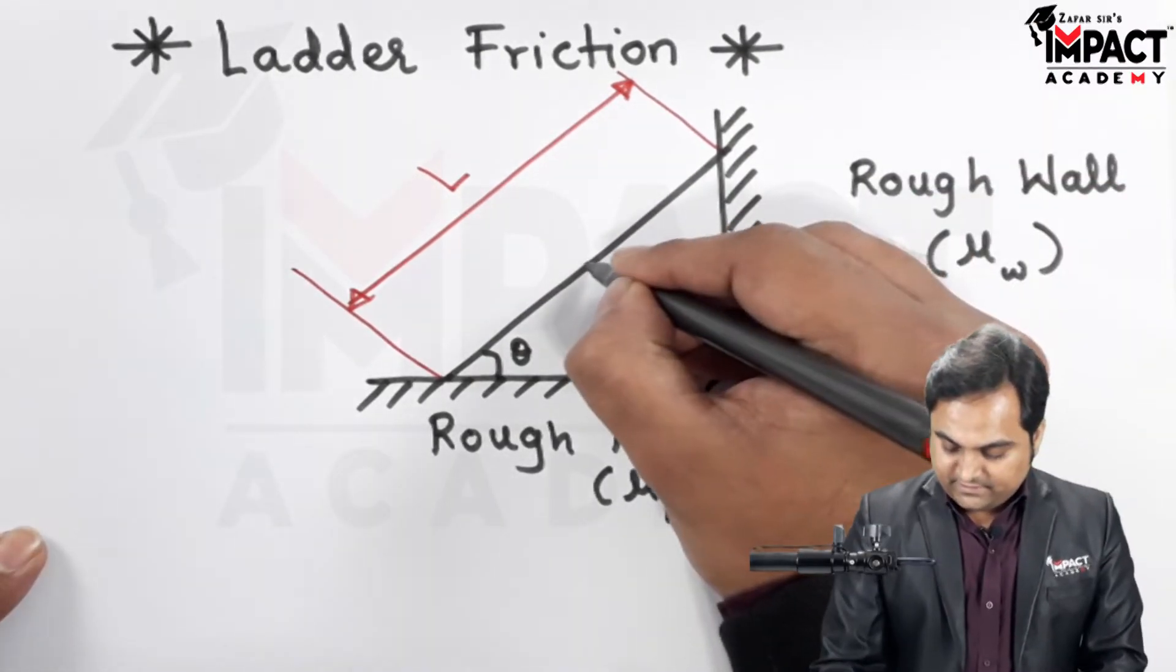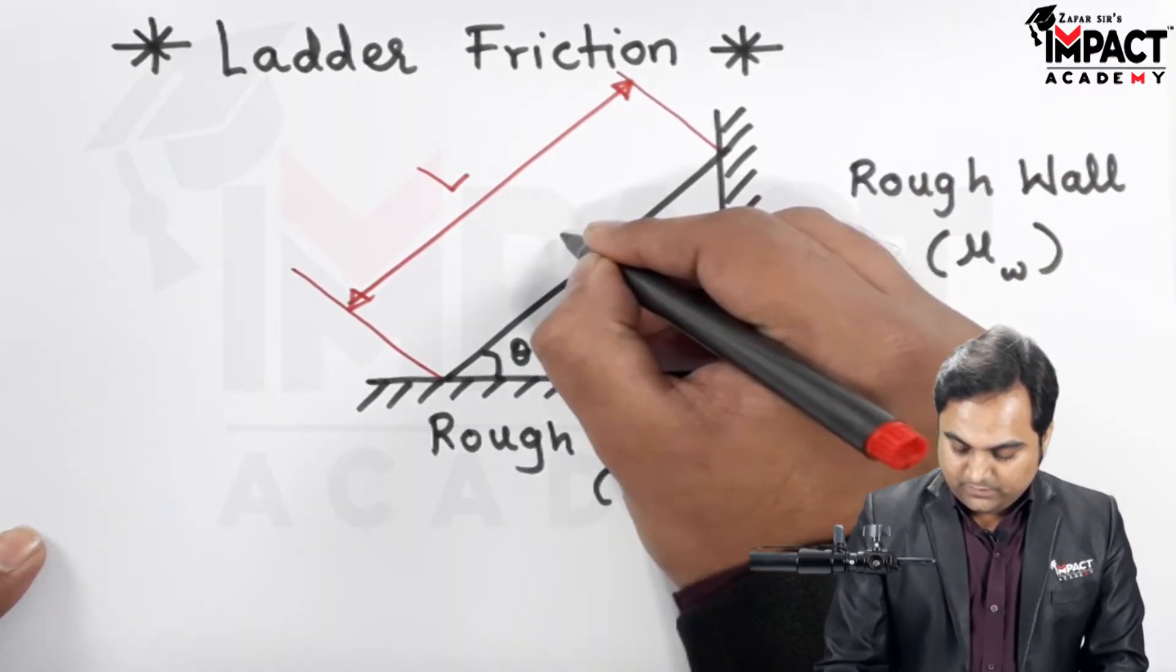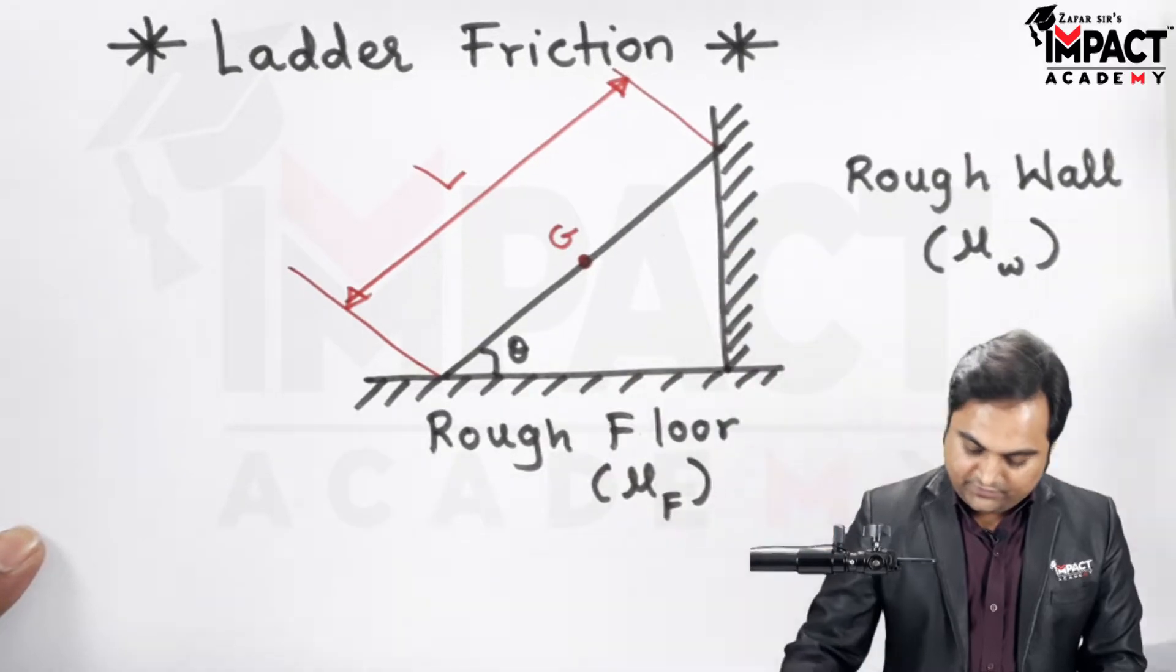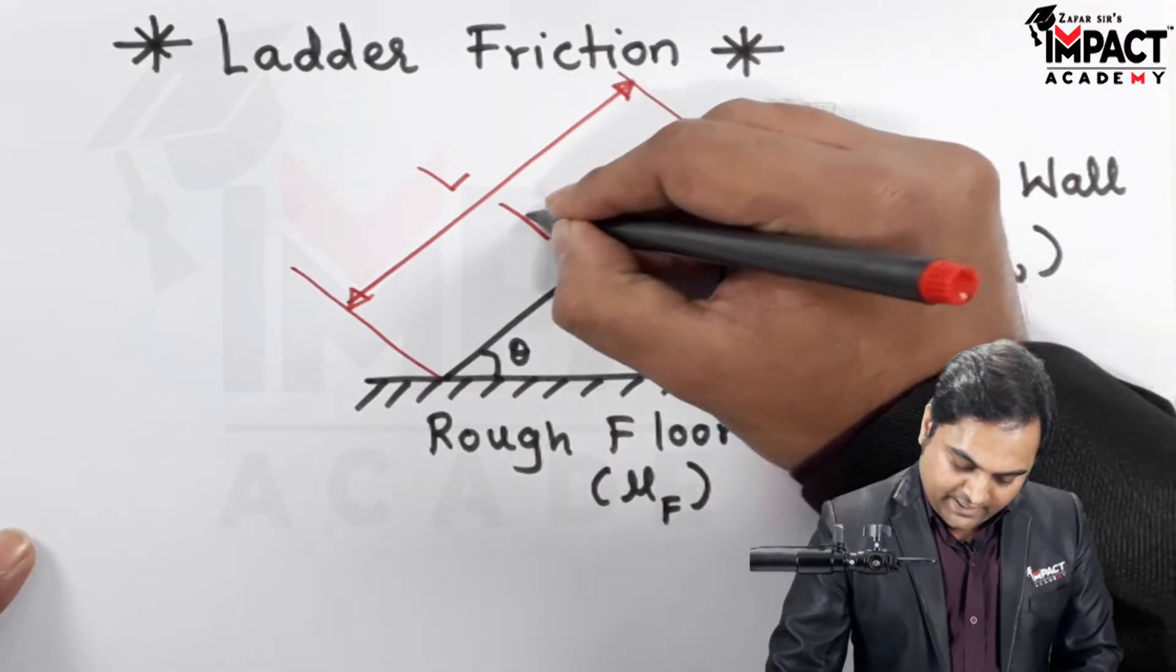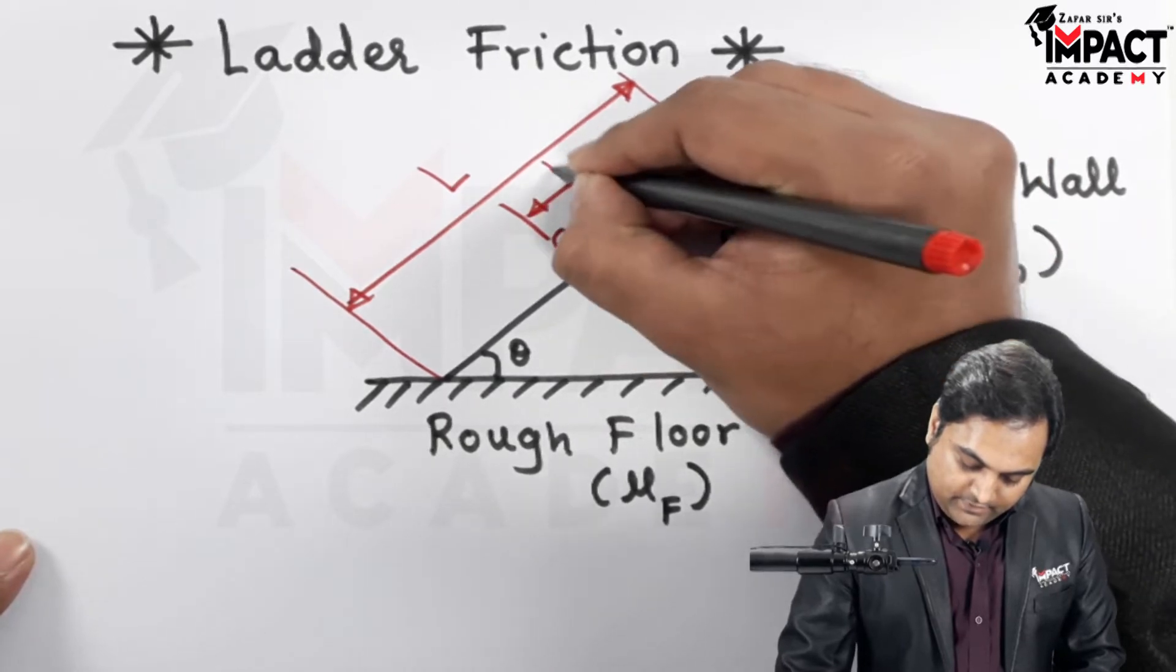And exactly at the half of the length will be the CG or the center of gravity for the ladder, where the weight would be acting at L by 2 distance.